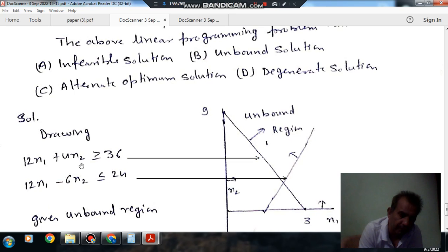If we put x2 equal to 0, then x1 is 3. We will draw the constraint. So this point is at 3. Now drawing the constraint 12x1 plus 4x2 greater than or equal to 36. If we put x1 equal to 0 and x2 equal to 0, then 0 is not greater than 36, so its feasible region will be in this way.